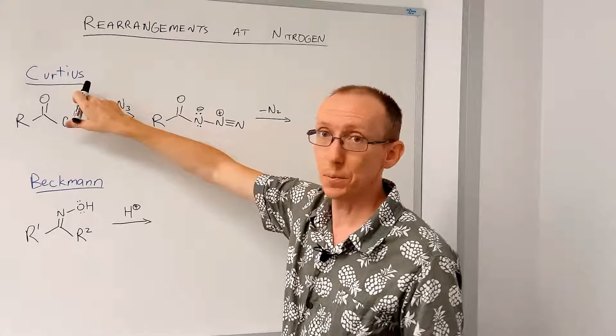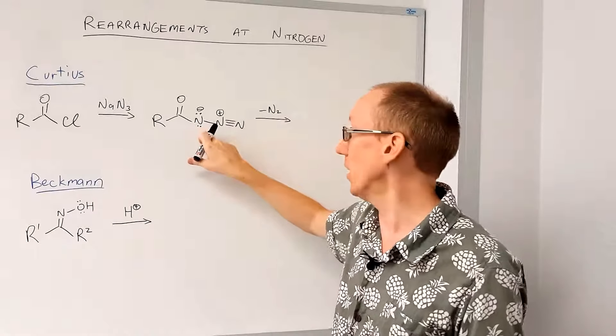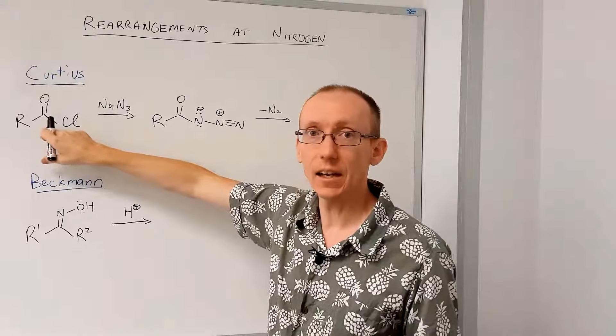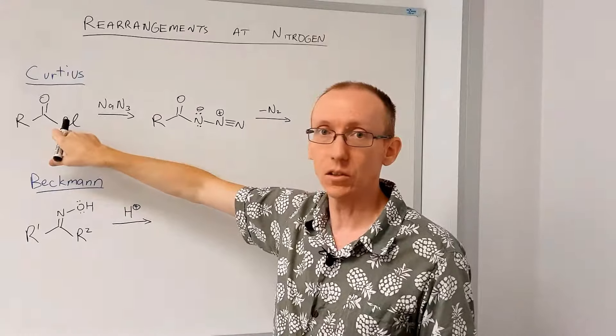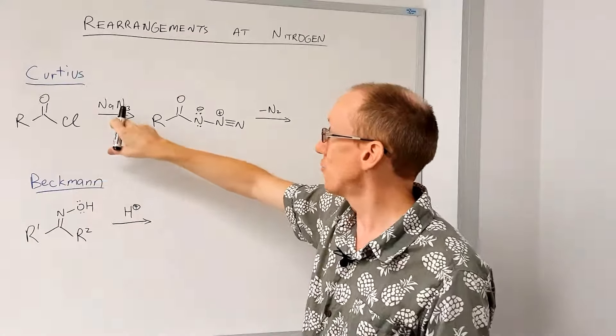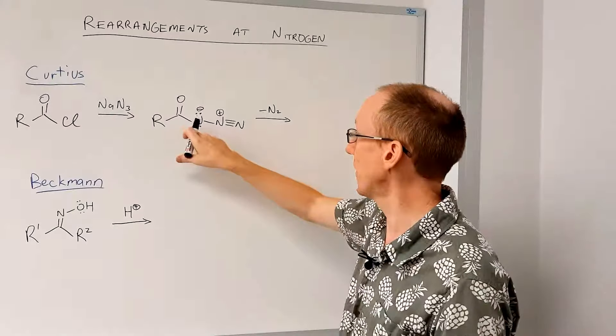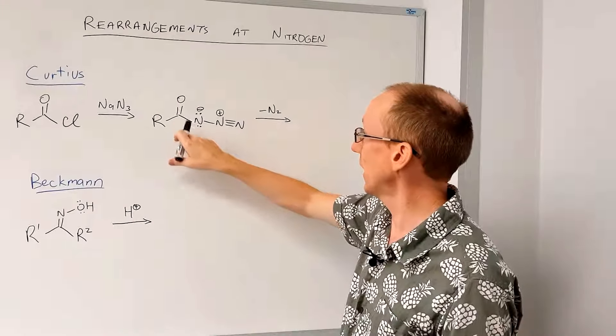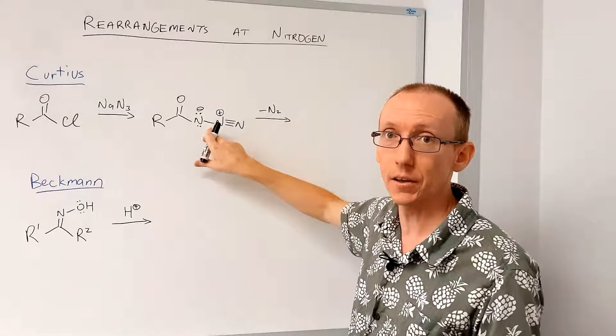So the Curtius rearrangement starts with an acyl azide. Now to make the acyl azide, we generally take an activated acid derivative, such as an acid chloride, and treat it with sodium azide. There's other ways to do this, but that's one of the simplest. Then we get an acyl azide. So that's the acyl group there, and here is an azide or azido group.